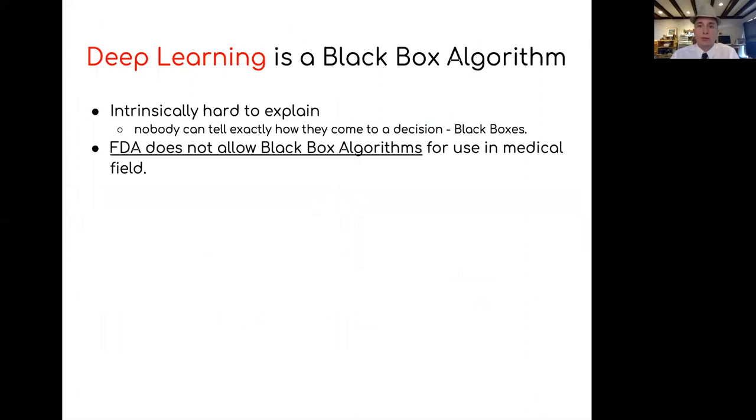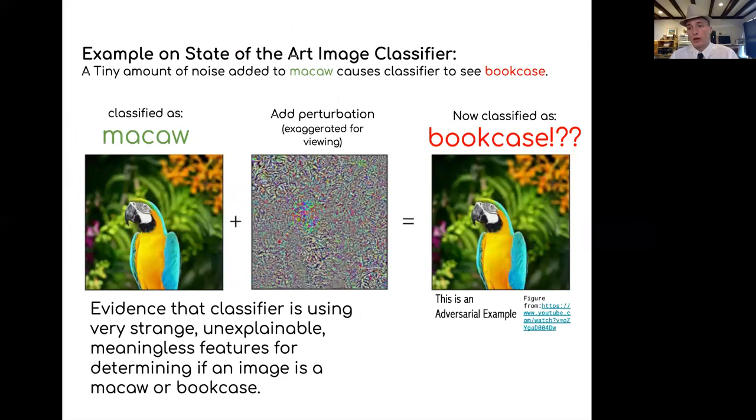But here's the catch. Deep learning is a black box algorithm. You can't tell how a deep learning algorithm gets from A to B. Unfortunately for us, the FDA does not allow black box algorithms for use in the medical field. Here's why deep learning has a flaw. This is a state-of-the-art image classifier. It classifies macaws and bookcases. If you feed this image of a macaw, it would say it's a macaw. But then if you add this noise to the macaw, you get a bookcase. This is not a bookcase, but the machine believes it's a bookcase because of the small noise we added.